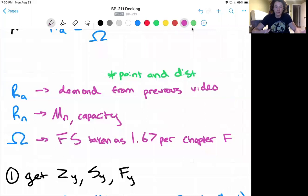Now the first step is to get the components of our equation: Zy, Sy, and Fy.